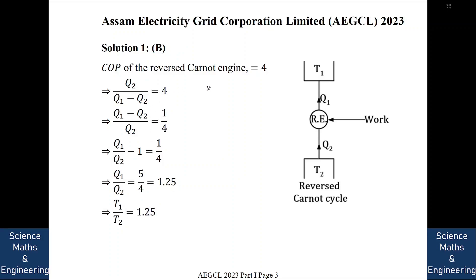Now, since it is working on the reverse Carnot cycle, so Q1 by Q2 is equal to T1 by T2. So we get T1 by T2 is equal to 1.25. So highest absolute temperature divided by the lowest absolute temperature, there is the temperature of source divided by temperature sink is equal to 1.25. So we will go to the next question.